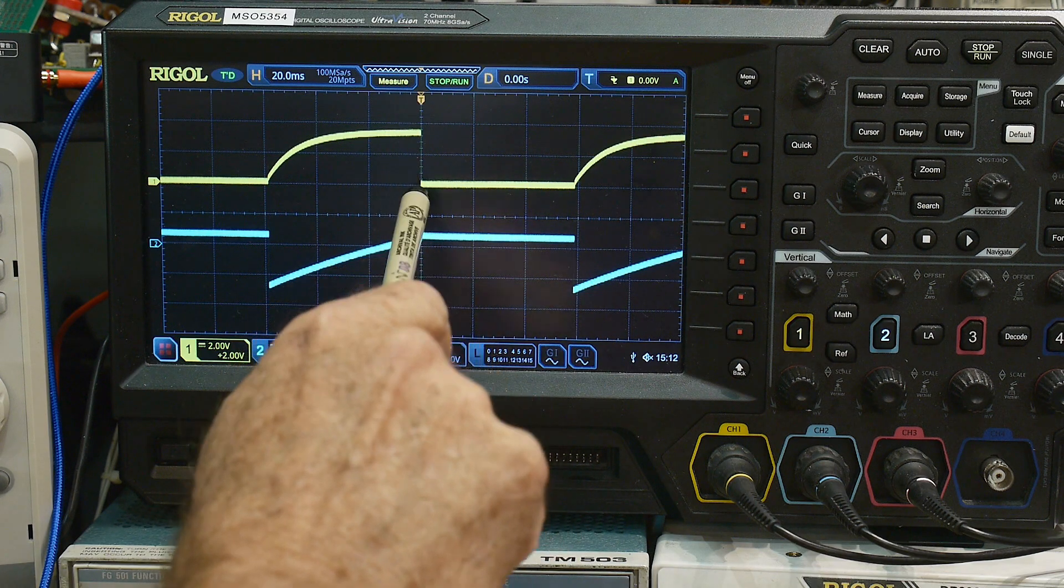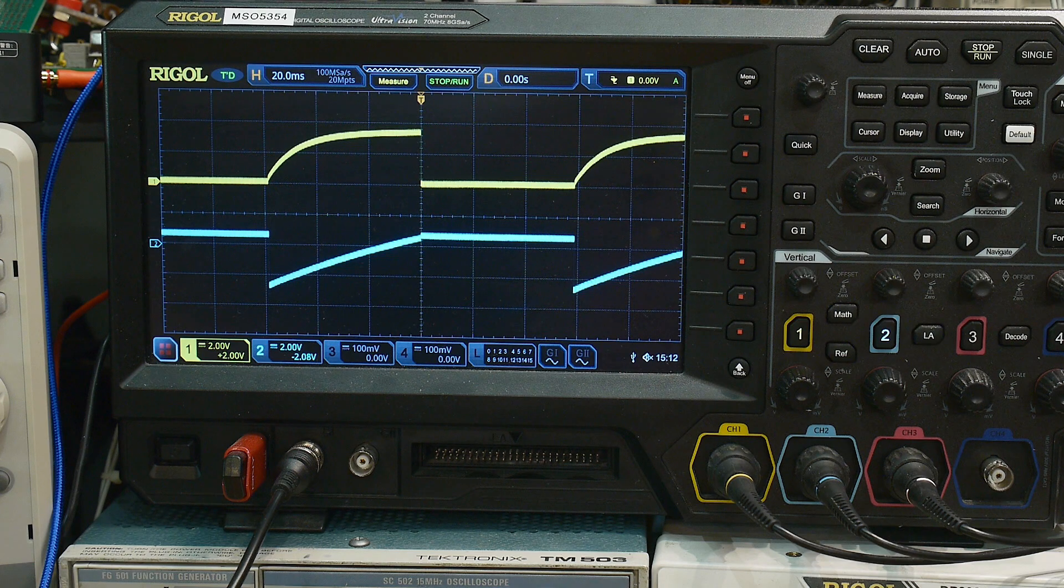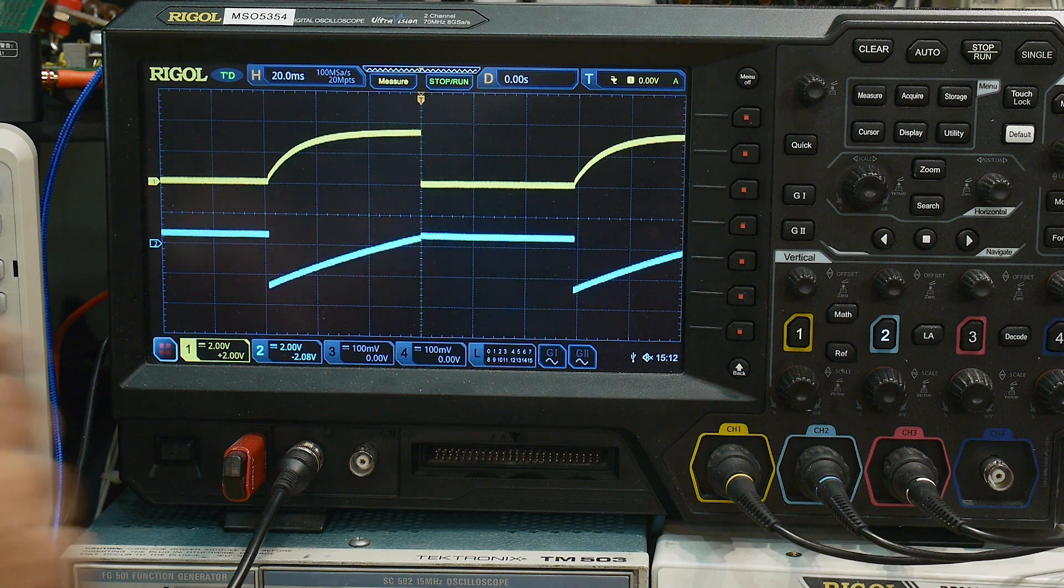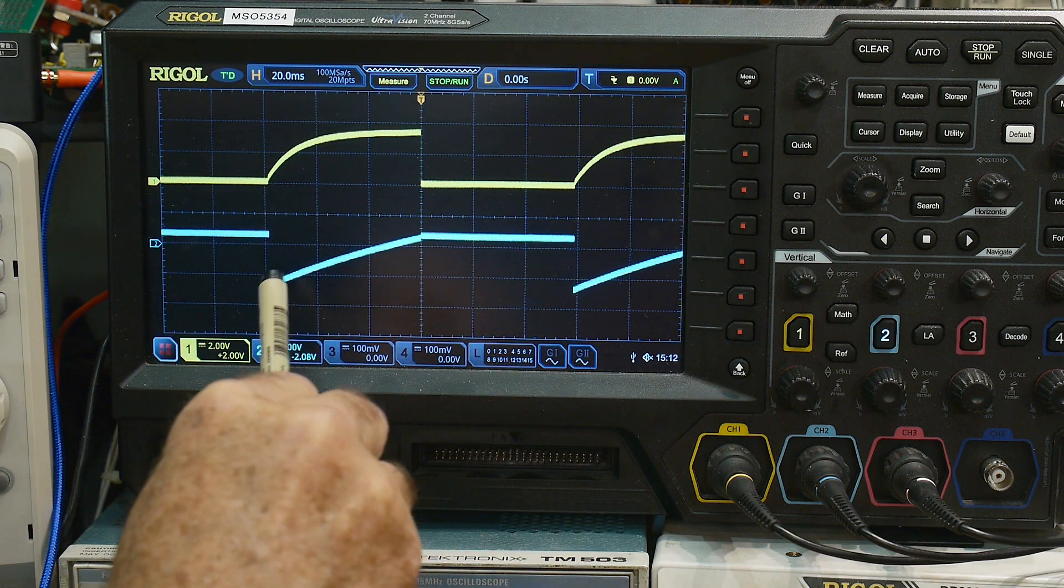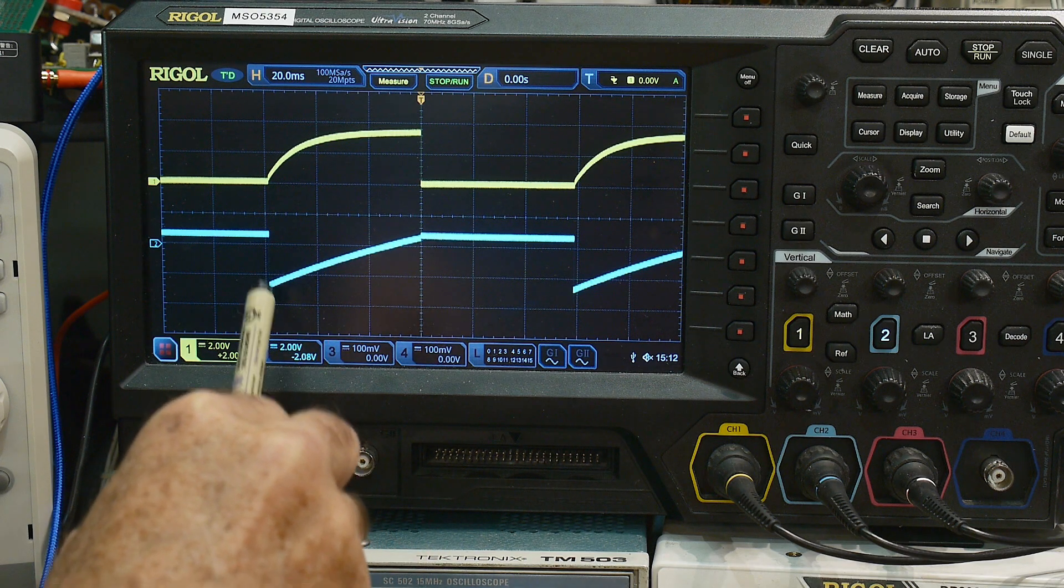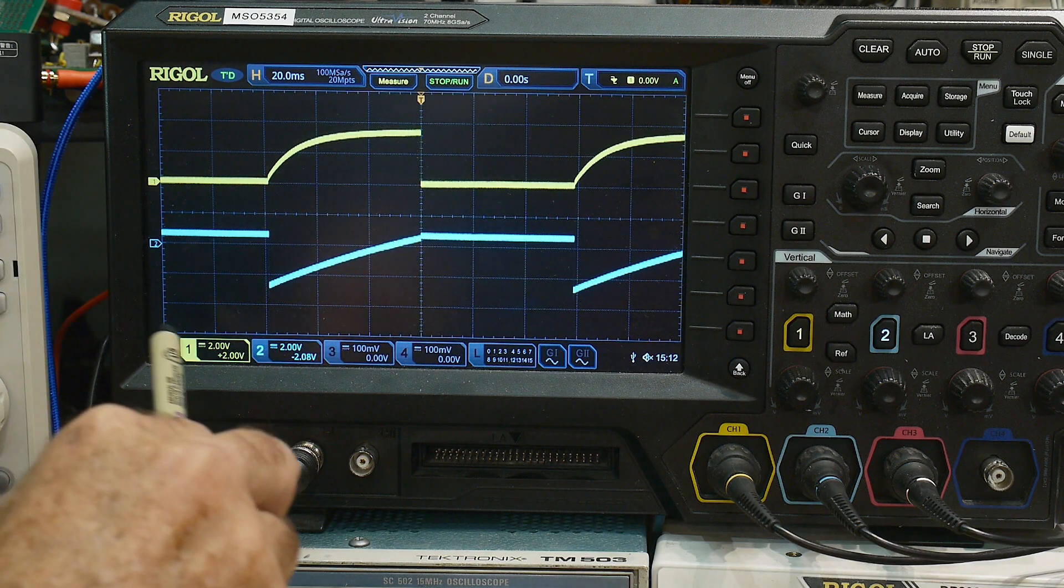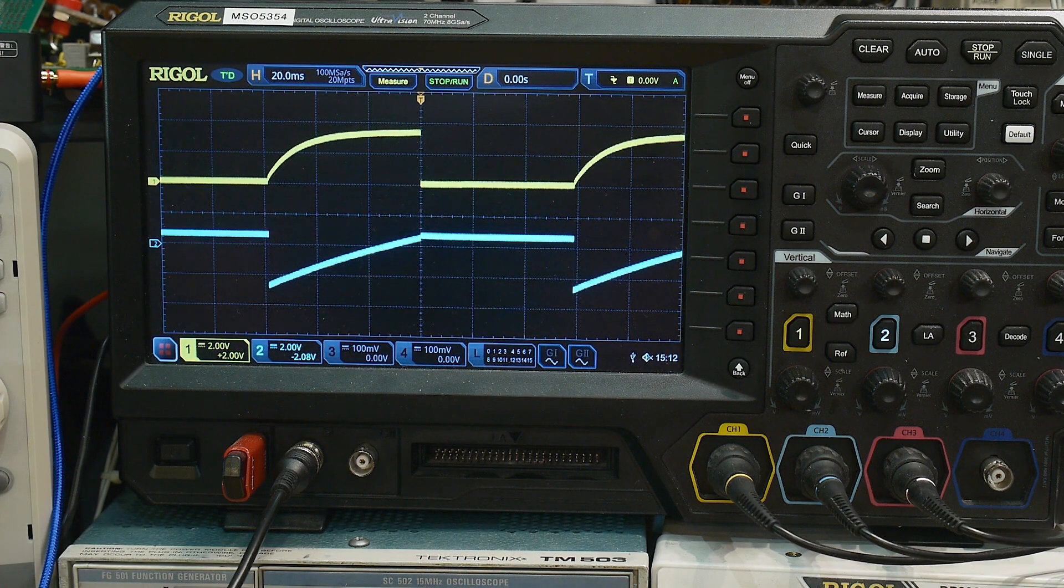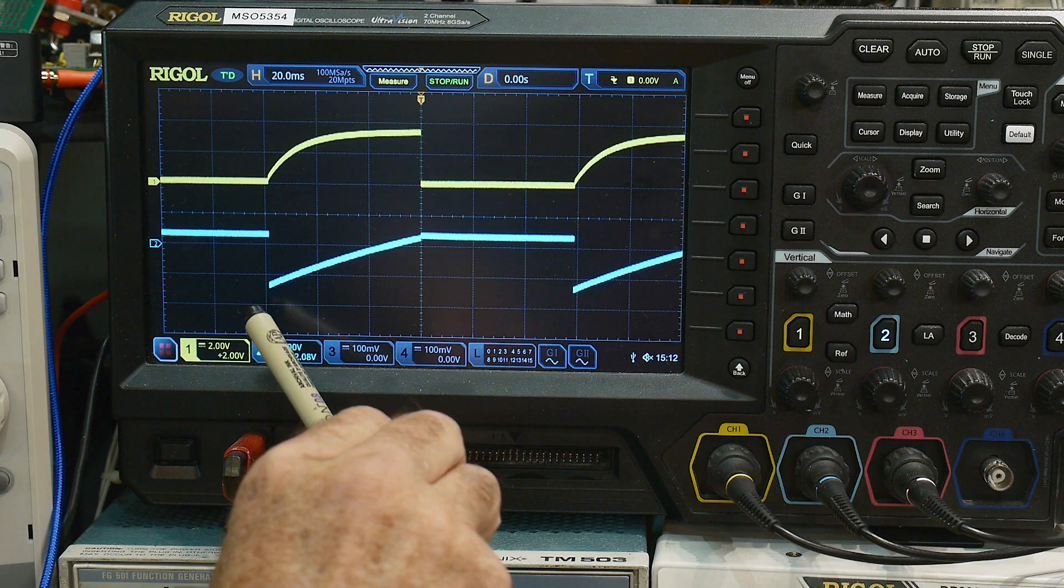Now the unusual part of this particular waveform is that here is ground. So this waveform actually goes about minus 2.5 volts below ground. Minus 2.5 volts. And when it gets up to about 0.6 volts, that's when the transistor can turn on. So it's off from minus 2.5 volts up to plus 0.6 volts.